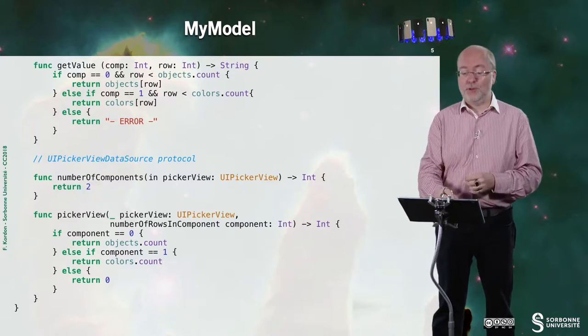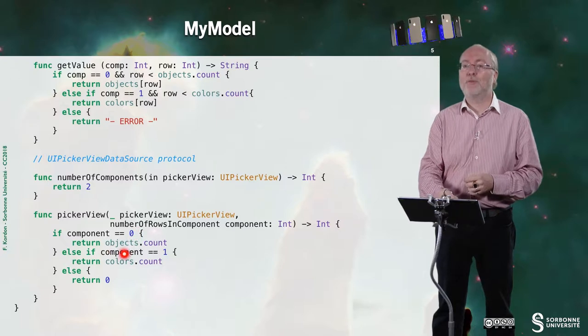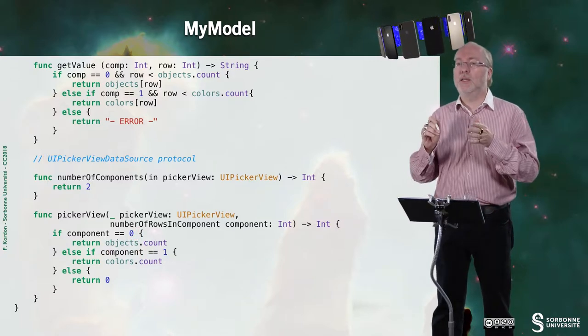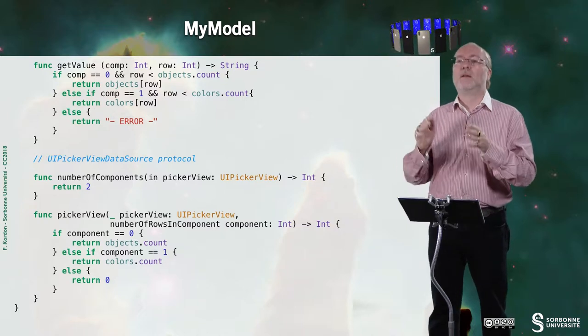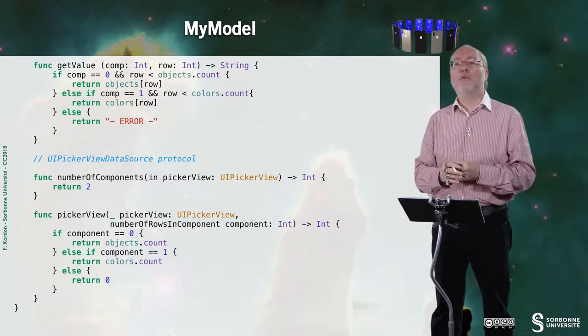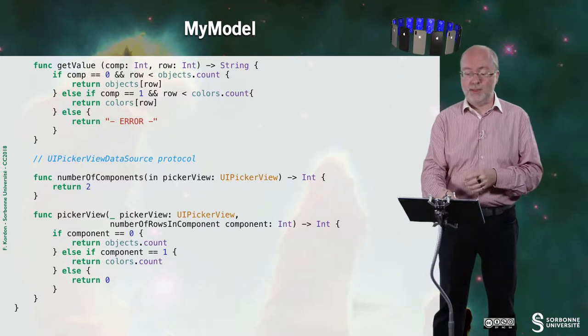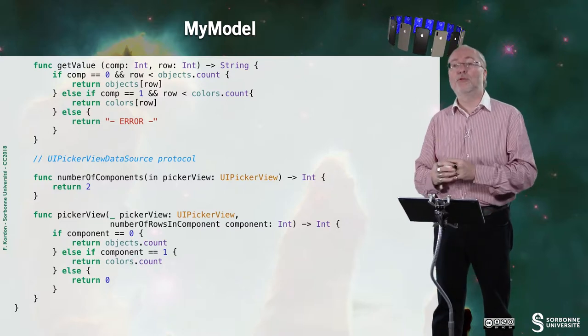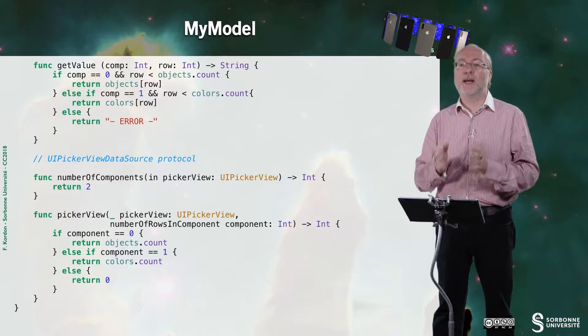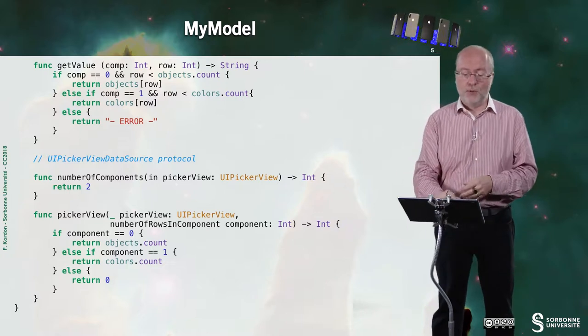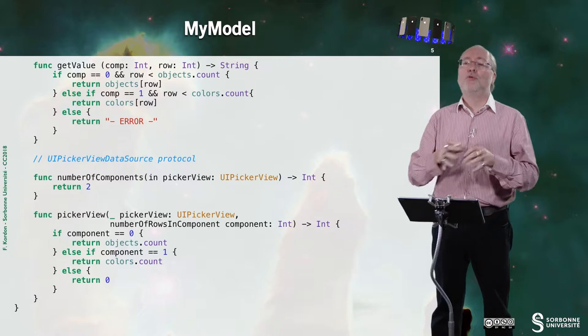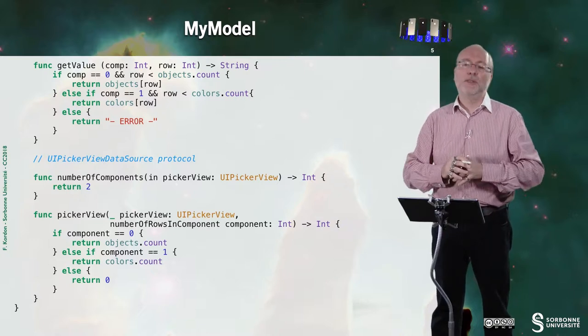And if the component number is zero, then I get from the number of objects in the object array, the number of rows for that component. And similarly for the second component, I will get the size of the color array as a number of the component. And once again the return zero is just to avoid any warning, but it will never be in fact.